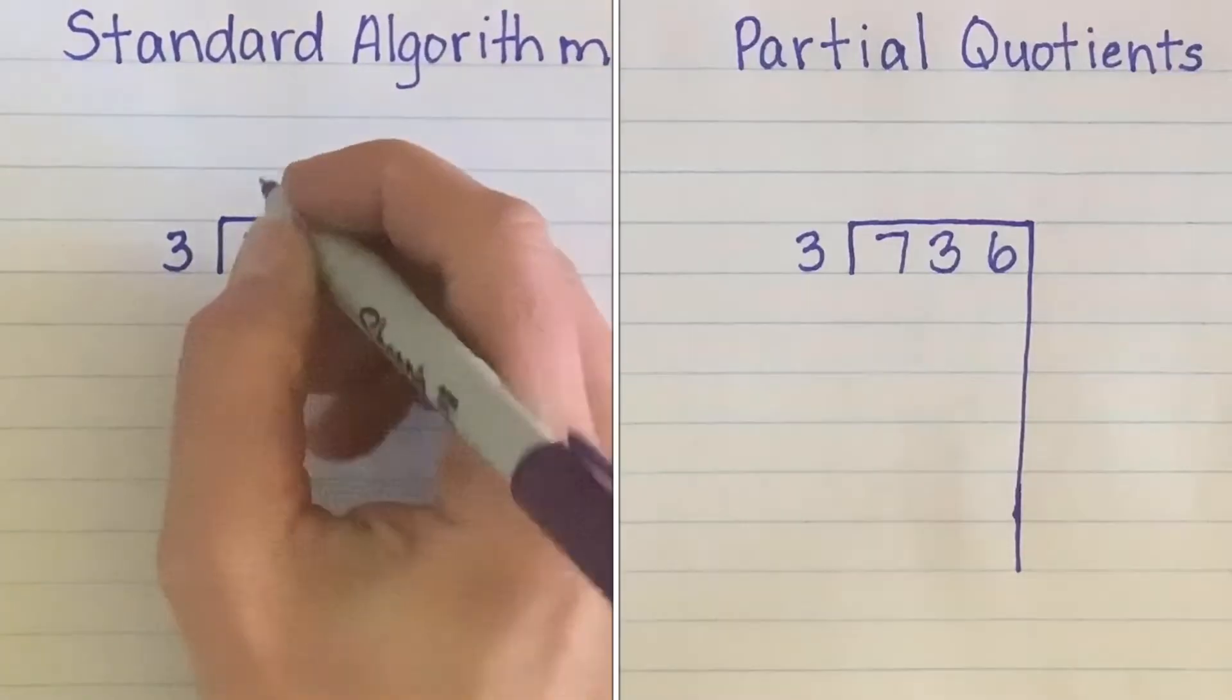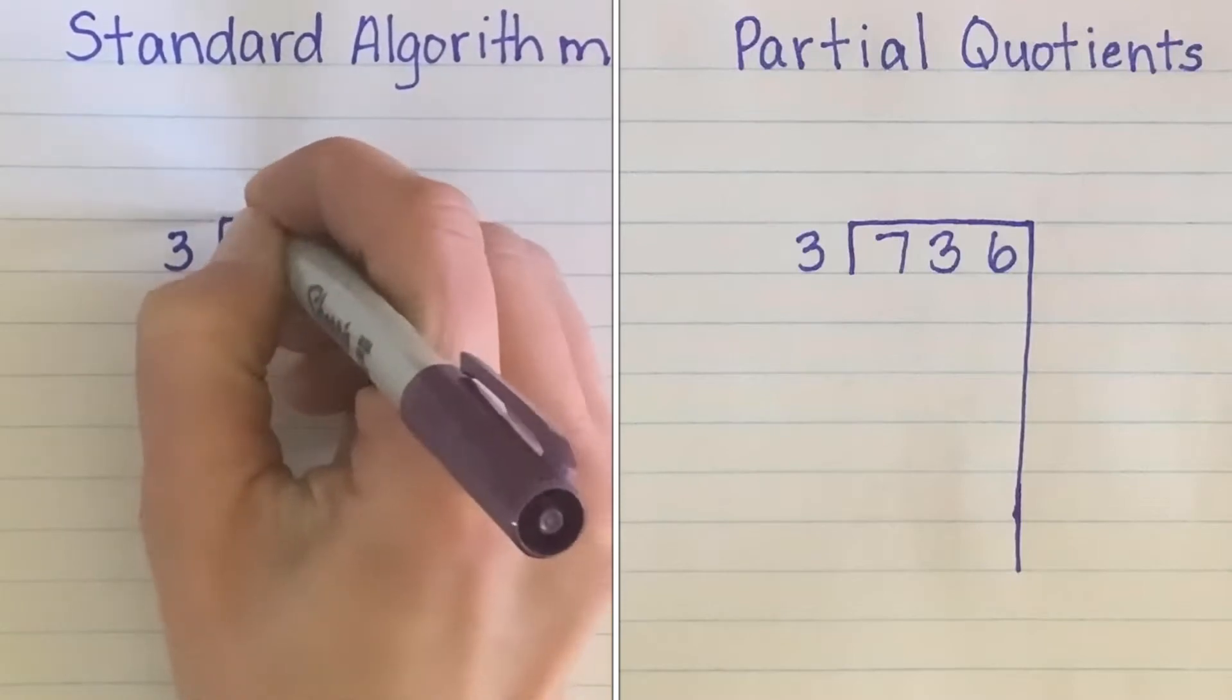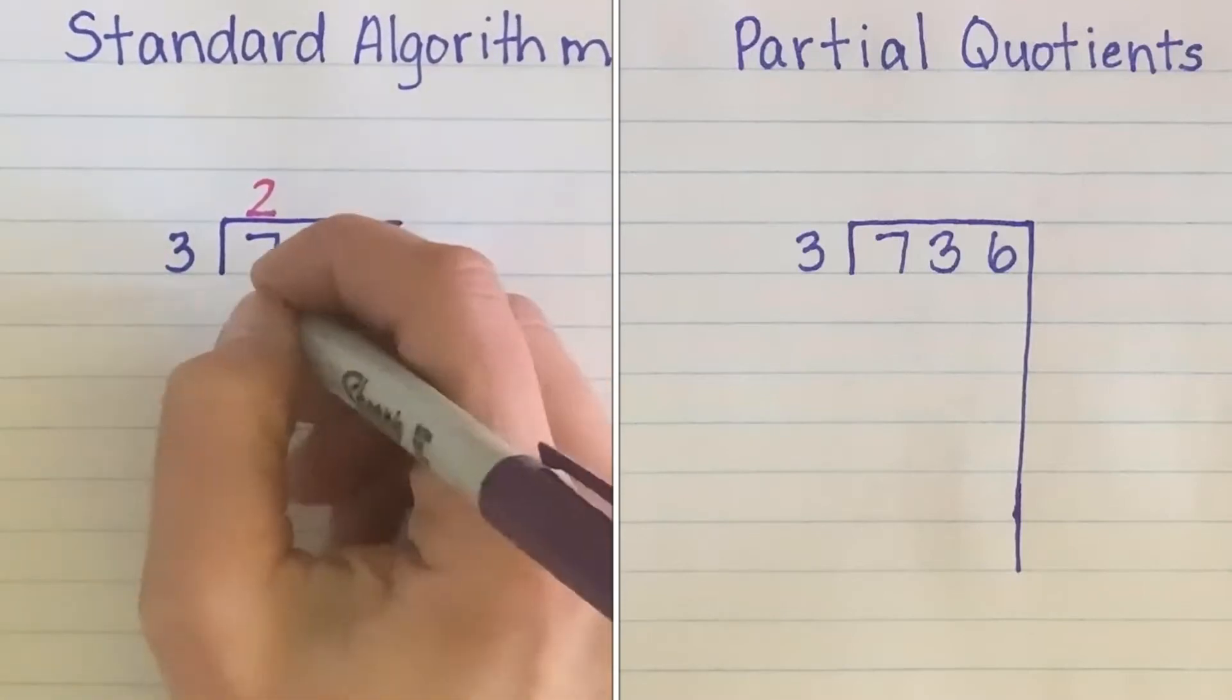Using my multiplication facts, I know that 2 groups of 3 is the largest product that can be subtracted from 7.